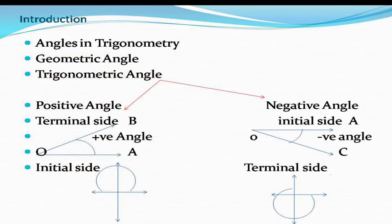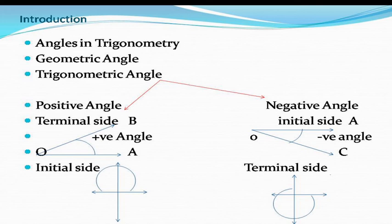Let's start with angles in trigonometry. You have already covered the concept of angles in Class 6 and 7 — when a line cuts or touches another line, an angle is formed. These are geometrical angles. When a line cuts or touches another line and an angle is formed, that is known as a geometric angle. Now, trigonometric angles are different from geometric angles.